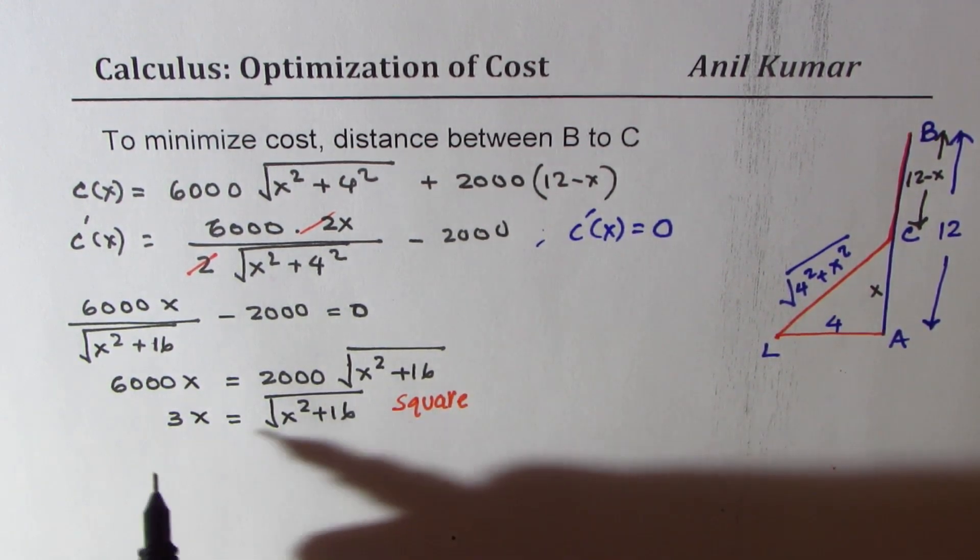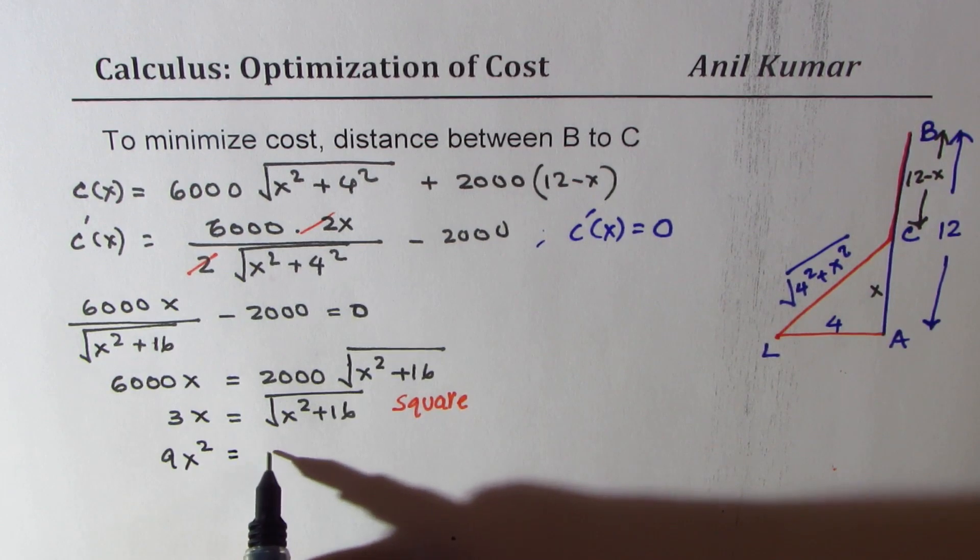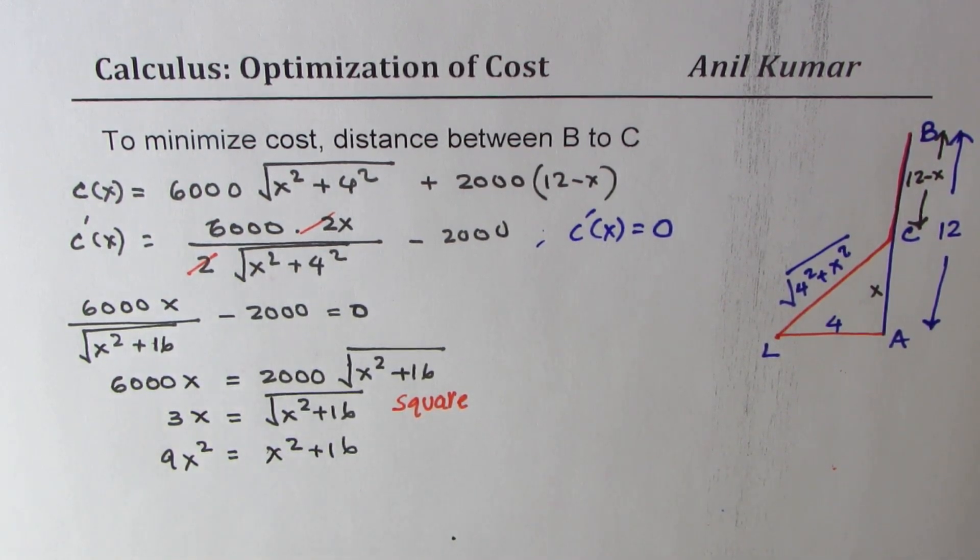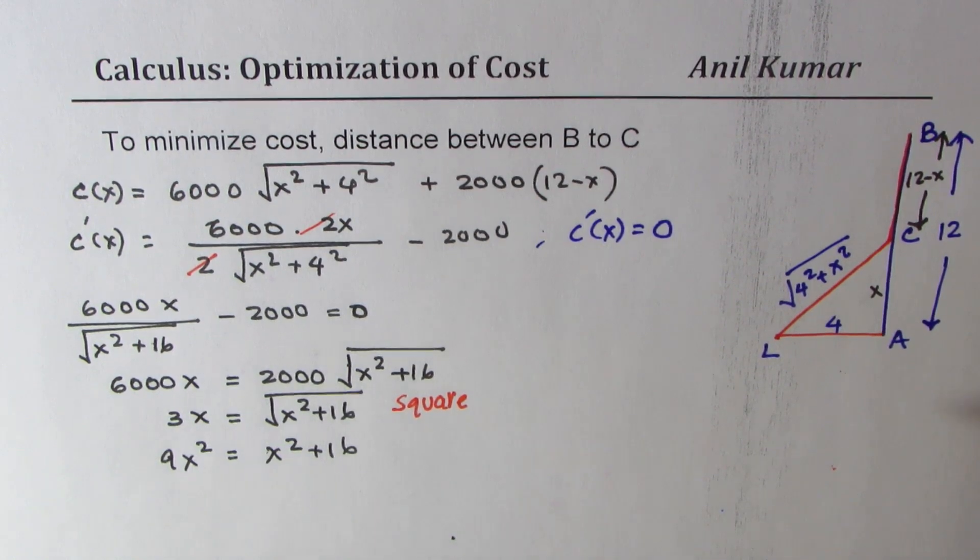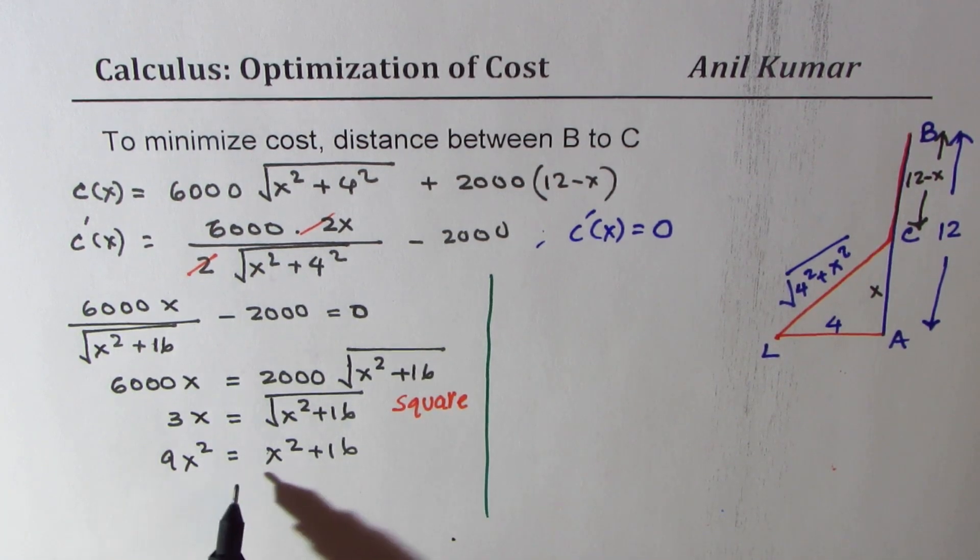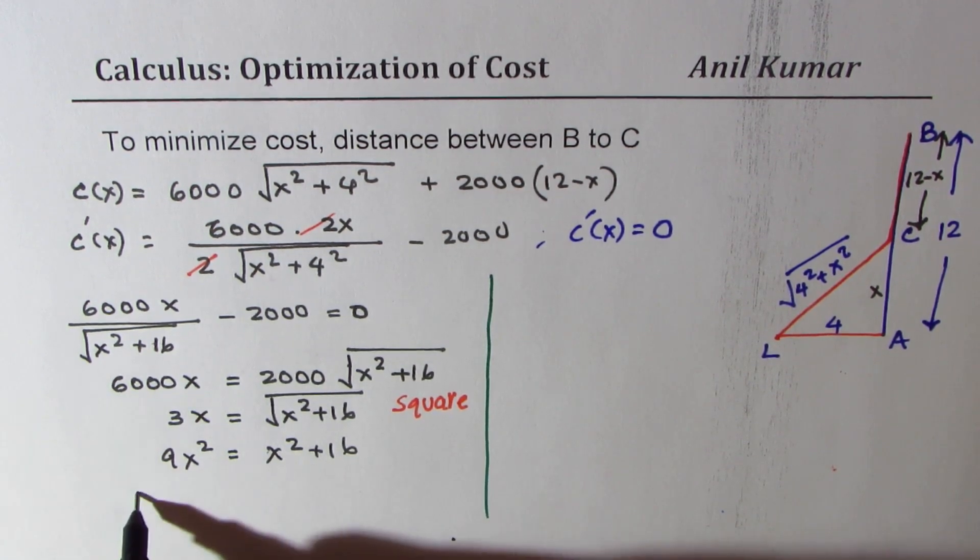In that case, we get 9x square equals to x square plus 16. Now it is easy to find the answer. These steps are very critical, so I'd like you to follow such steps so that easily you can calculate the value. 9x square will bring x square to this side.